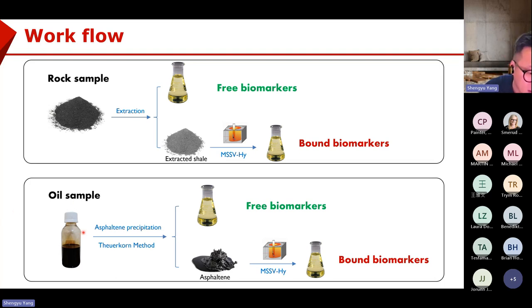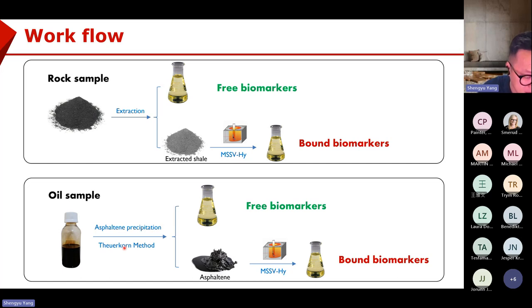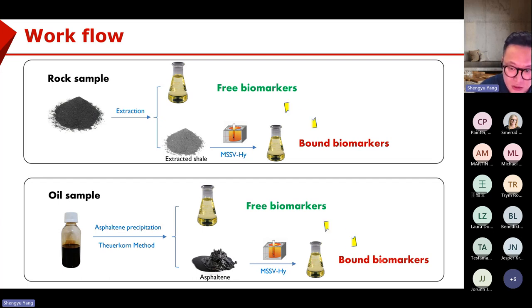For oil samples, we carry out asphaltene precipitation using the Toya Kohn method. She was a PhD student at GFZ and developed a very strict way to do the asphaltene precipitation — basically repeating the precipitation steps again and again to completely remove the free biomarkers. In this way, we separate free biomarkers and the asphaltene, and then heat the asphaltene to release the asphaltene bond biomarkers.